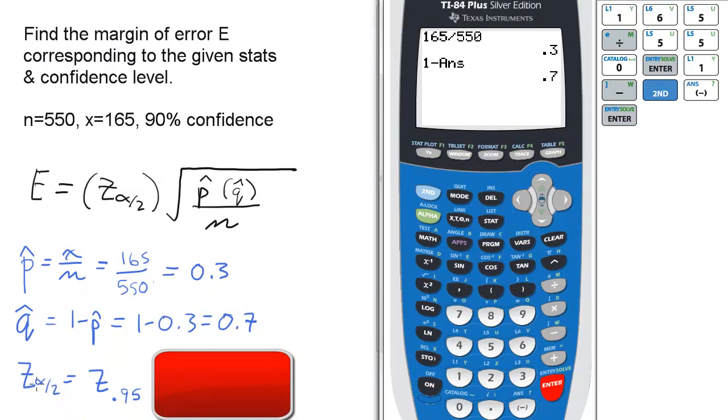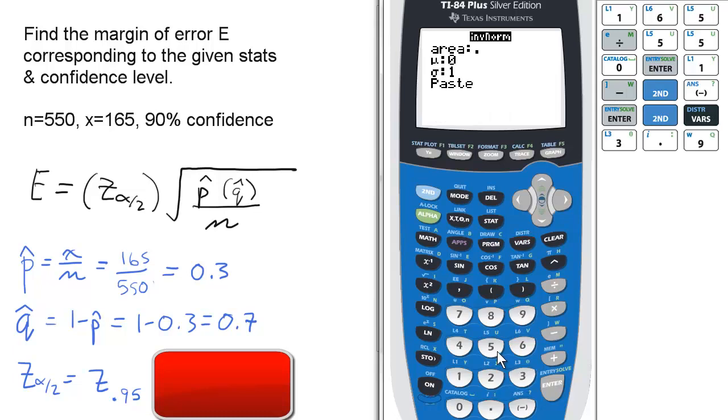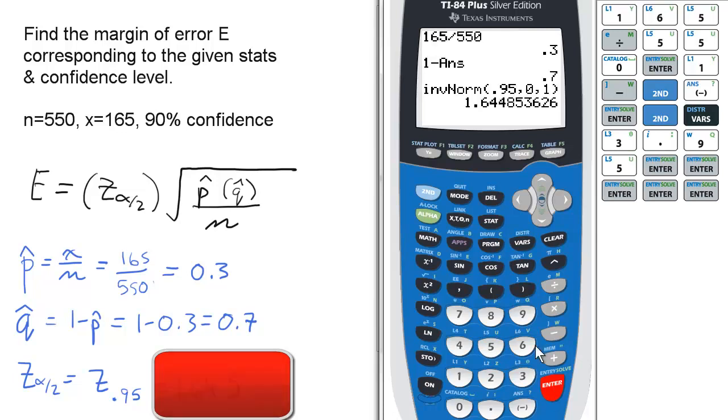For the Z score, it's Z alpha over 2, which is Z of 0.95. So we go to the inverse norm menu, and 0.95, enter. 1.644.